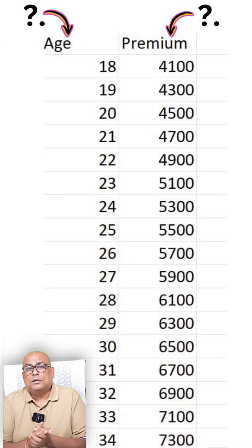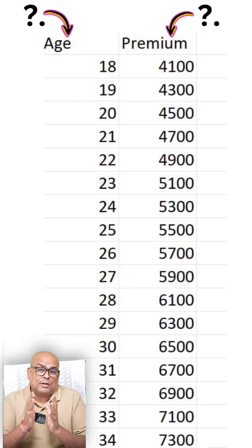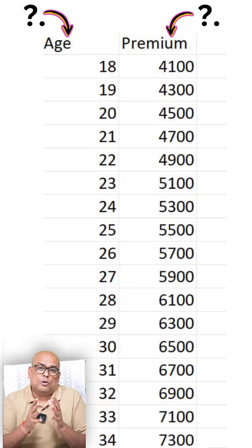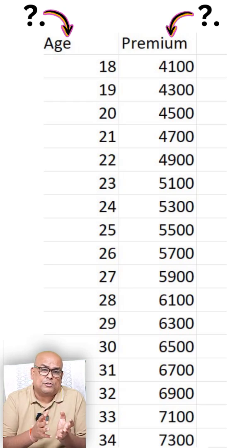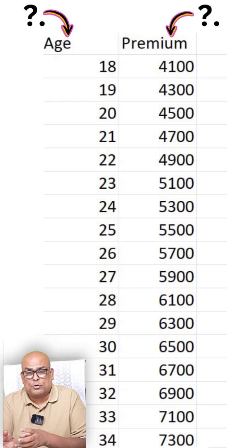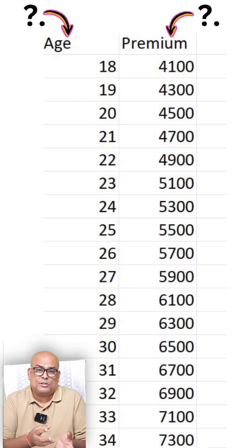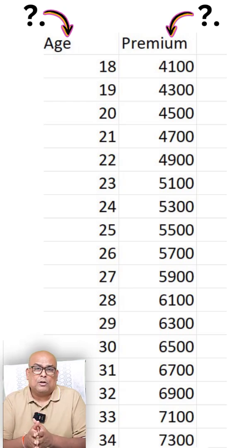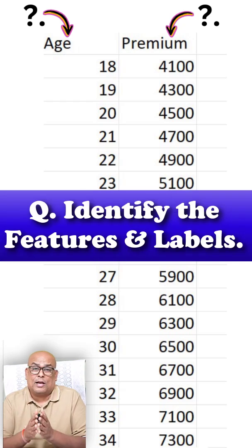Here is a small quiz. On the screen I have shown the age of the person and insurance amount. For 50 years of age the insurance amount is a certain value, for 60 years it is another value. The question is: what is the feature in this and what is the label?